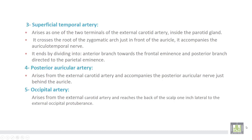Number three, the superficial temporal artery arises as one of the two terminal branches of the external carotid artery. It arises inside the parotid gland and crosses the root of the zygomatic arch just in front of the auricle. It accompanies the auriculotemporal nerve and ends by dividing into an anterior branch towards the frontal eminence and a posterior branch directed to the parietal eminence of the skull.